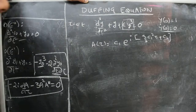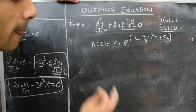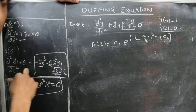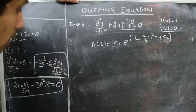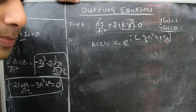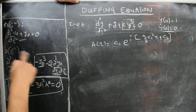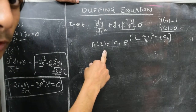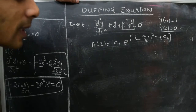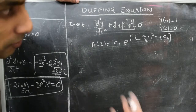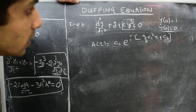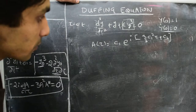Having solved for a(τ), we have now ensured that y1, whatever it is, will remain bounded, although we are not explicitly solving for y1. We cannot fully solve it using an expansion only up to order epsilon because the solution for y1 would again involve some function b(τ), and to determine b(τ) we would need to expand to the next order y2, ensure no secular terms there, and so on. But for now, we are assured that the solution will remain bounded.